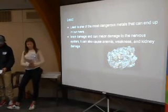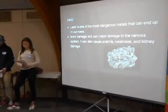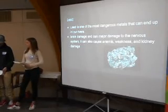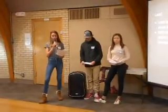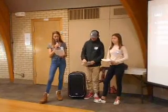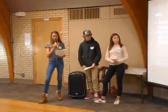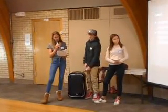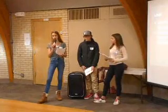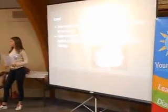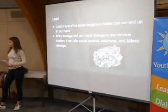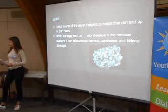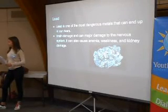Lead is one of the most dangerous metals and can end up in our rivers. It promotes brain damage and major damage to the nervous system, and in high doses it can even cause death. However, it is very uncommon in rivers and is mainly found in old house pipes — so if you have lead in your water, that's mainly where it comes from and not the river.